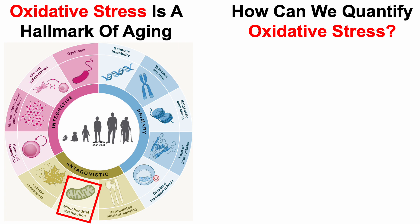Most commonly, it's measured by quantifying oxidative damage to nucleic acids, including DNA and RNA, but also oxidative damage to lipids and proteins.